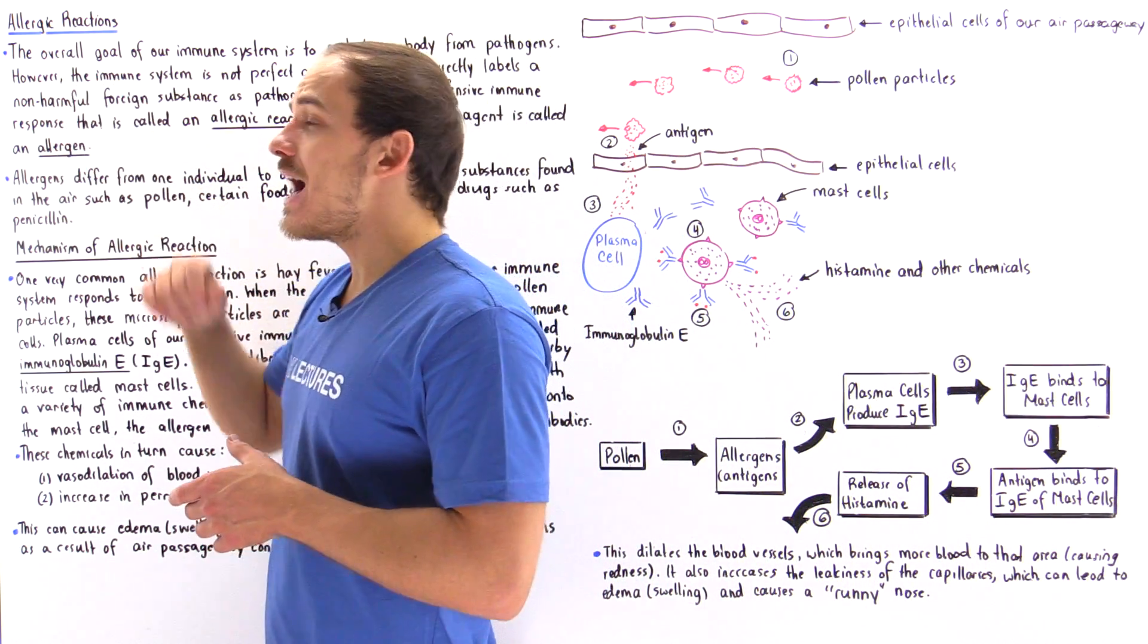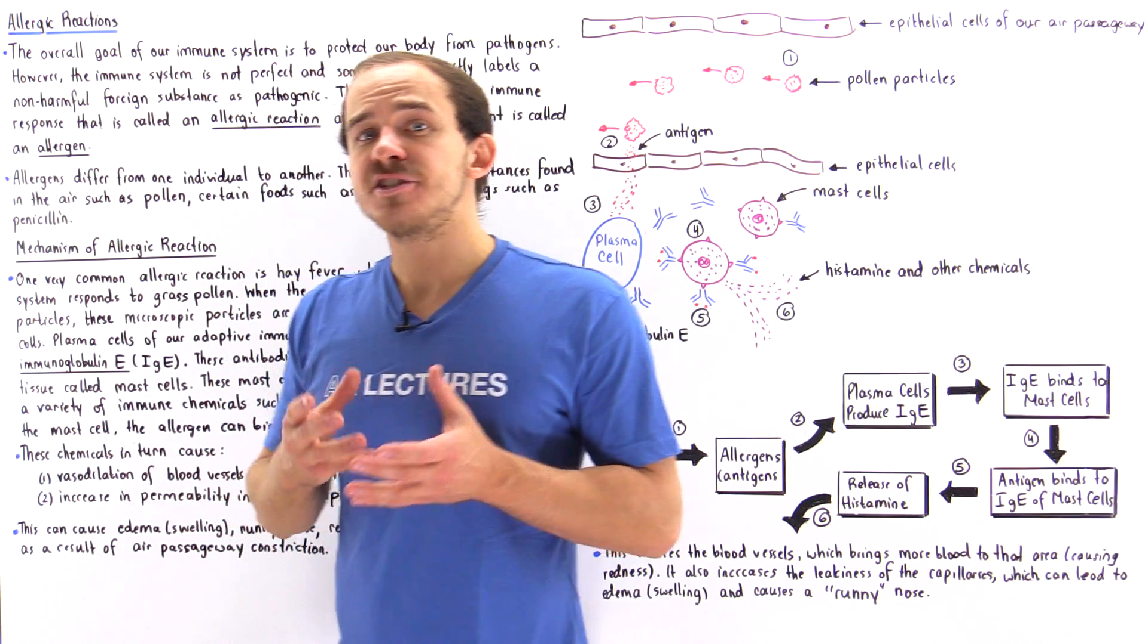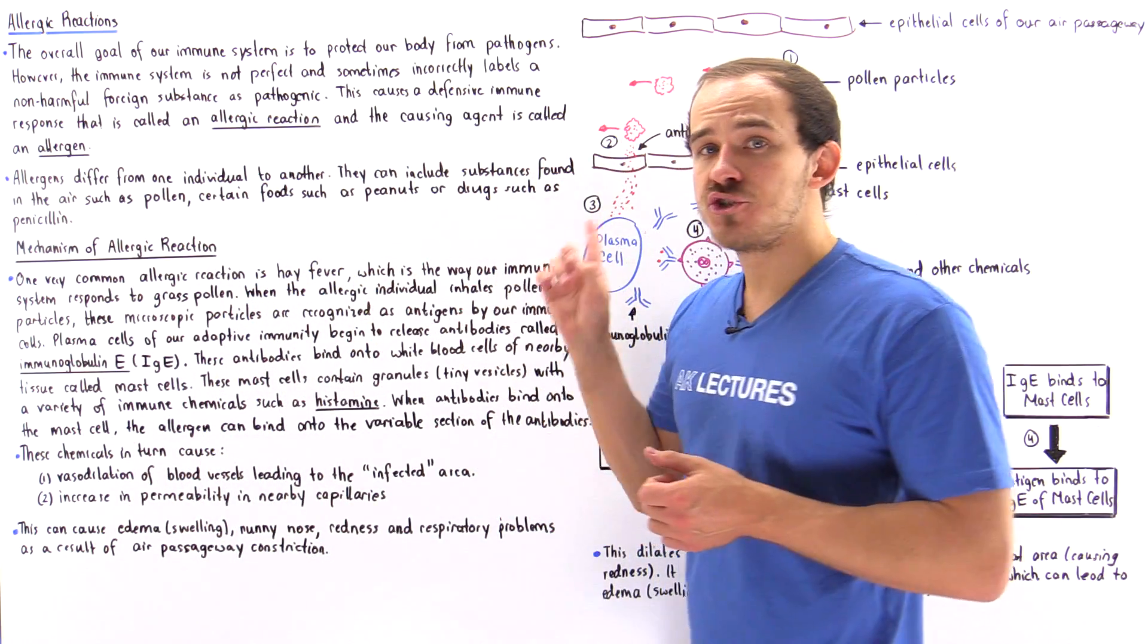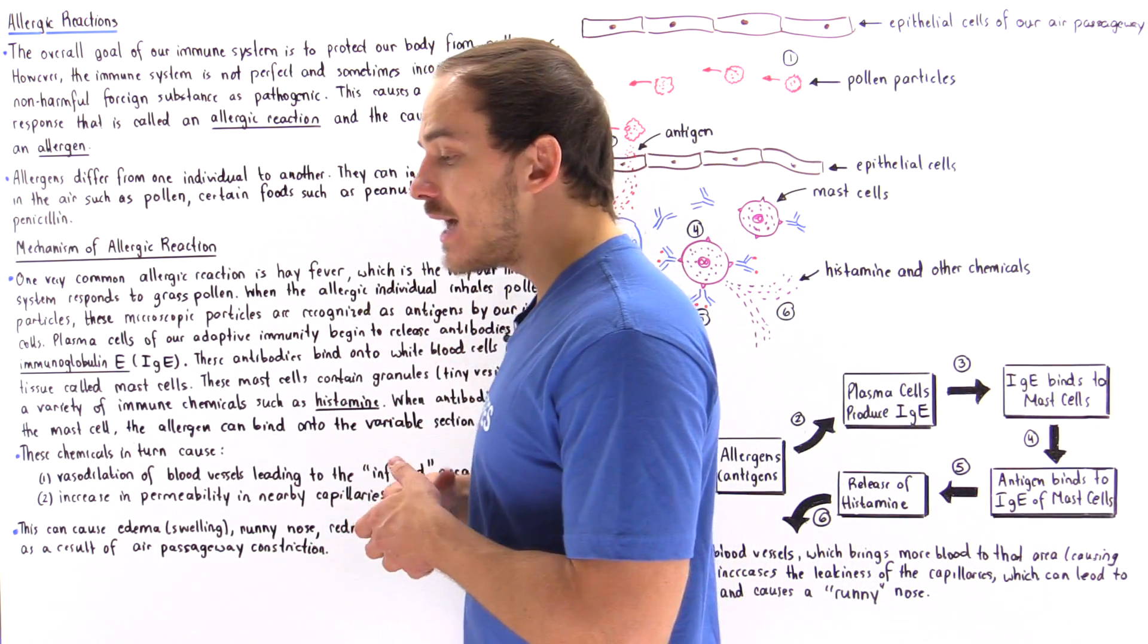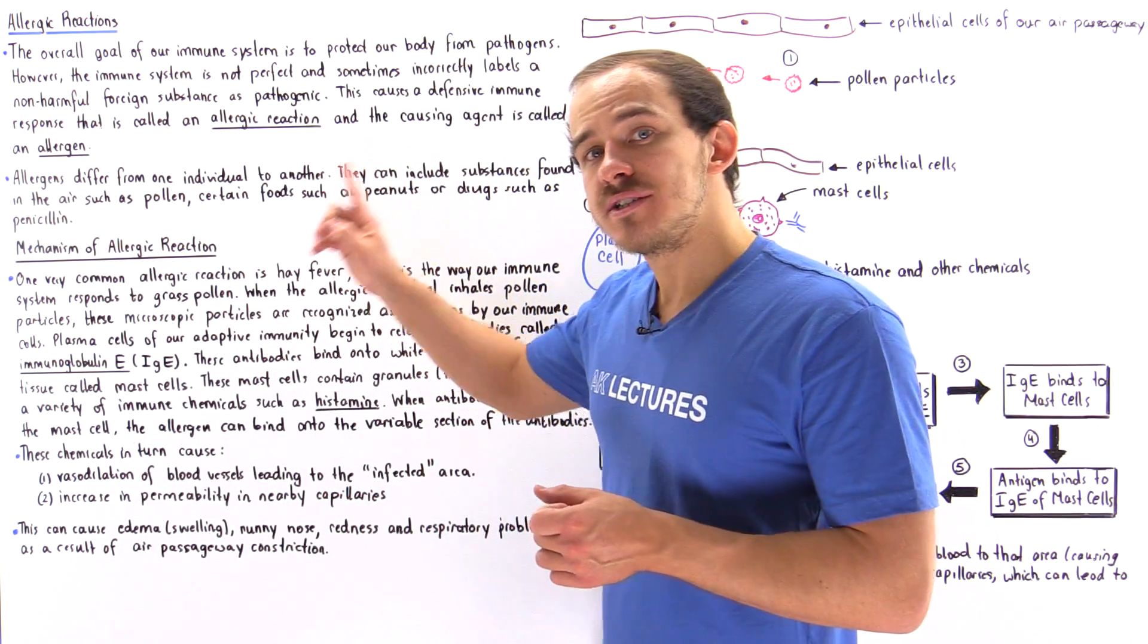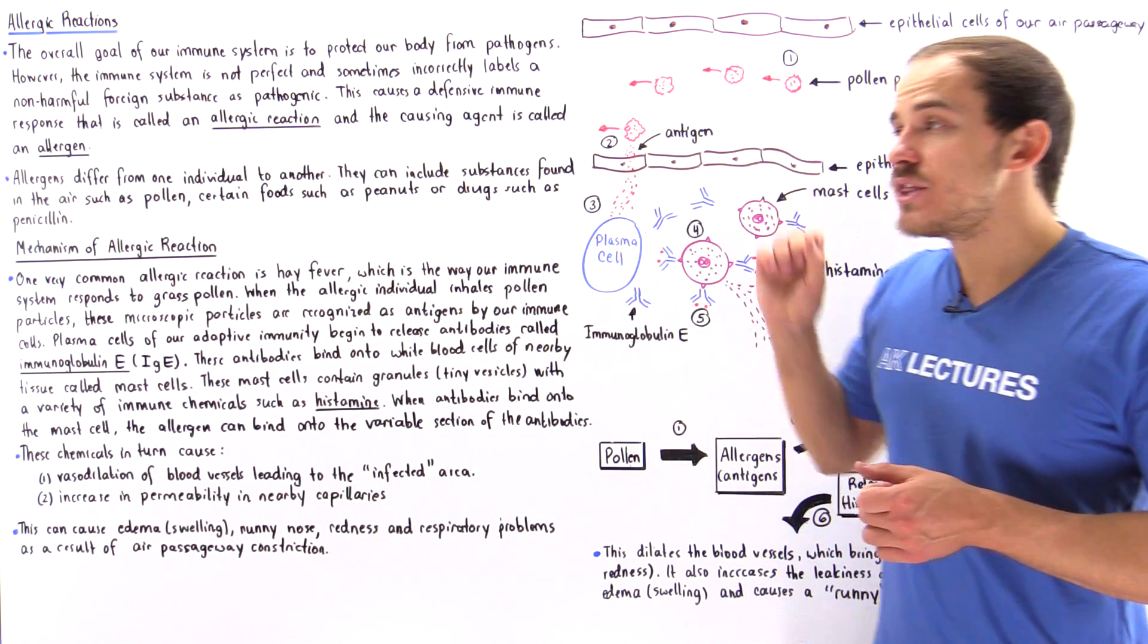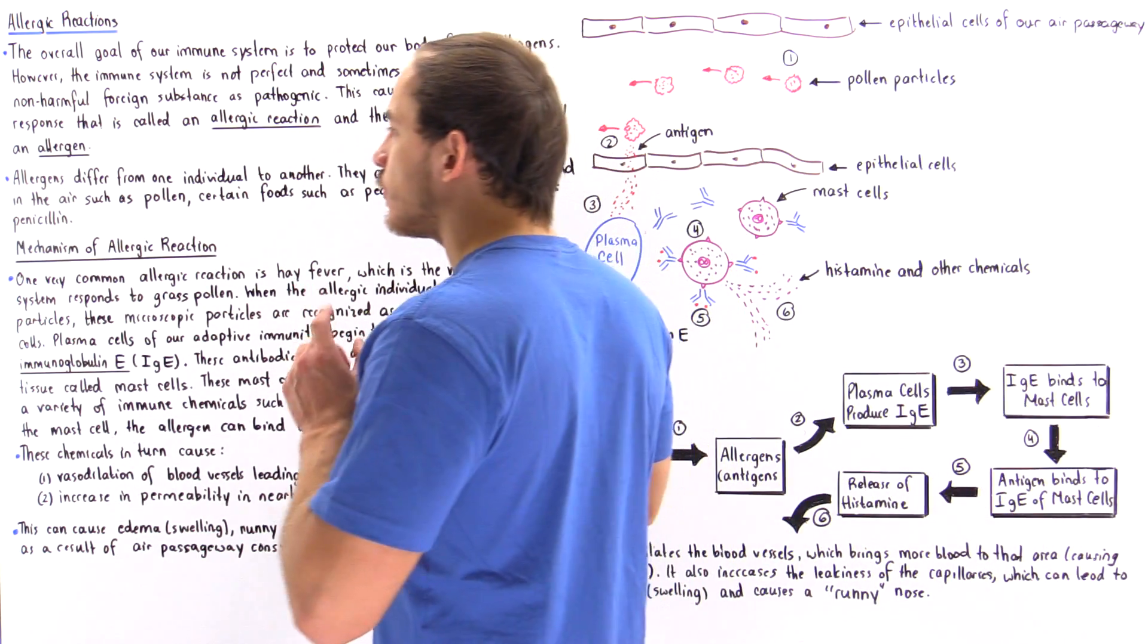Sometimes the immune system incorrectly labels an otherwise non-harmful foreign substance that enters our body as being harmful, as pathogenic, and this elicits, it initiates, a defensive response called an allergic reaction. And that causing agent that caused that allergic reaction in the first place is known as an allergen.